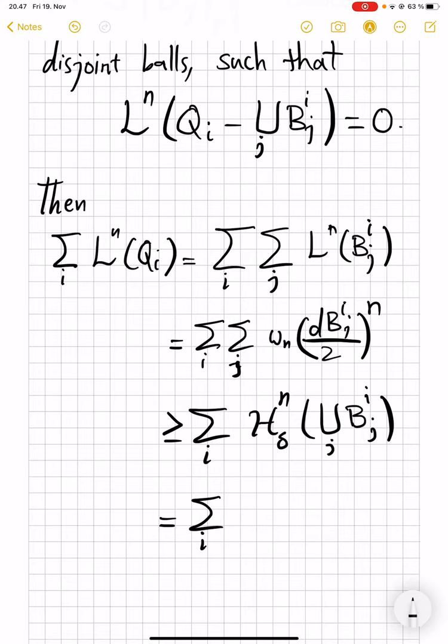Now, I claim that these union of b_ij's cover Q_i, except for a set of L^n measure. But that set of L^n measure, remember, gives also H^n_δ 0. In fact, H^n 0, but H^n is bigger than that. That's where we use this weaker part that we proved. That is used here to show that I can add back that remainder here, Q_i minus union of b_ij. So that I can put here, again, Q_i.